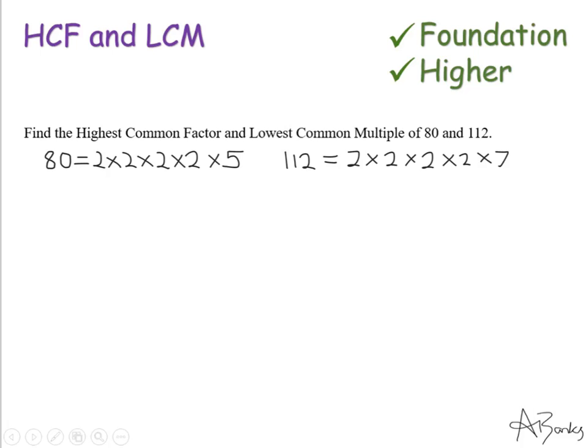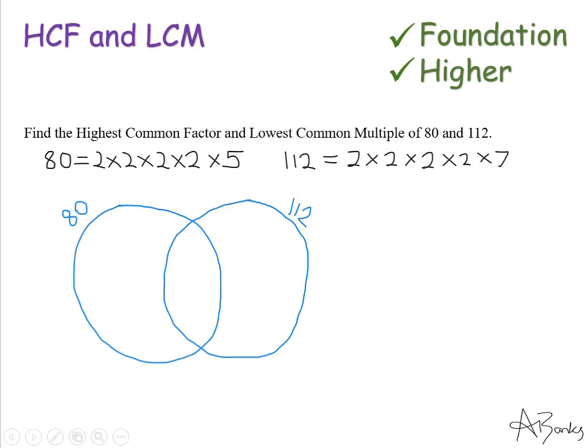Now I'm going to draw a Venn diagram for these two numbers. I've drawn two circles with 80 on one side and 112 on the other to remind me which is which. I need to fill in numbers into here. I'll start with the middle section, filling in numbers that appear in both lists. The first one I notice is a 2 — there is a 2 in both. I'm going to cross them off as I go along and put 2 in the middle.